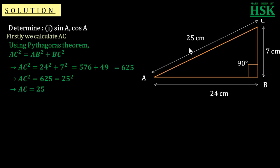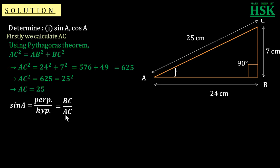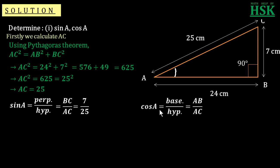We know that sine A equals perpendicular upon hypotenuse. With respect to angle A, the perpendicular is the side opposite to angle A, that is BC, and the hypotenuse is AC. Therefore sine A equals BC upon AC, which is 7 upon 25. Similarly, cos A equals base upon hypotenuse. With respect to angle A, the base is AB and the hypotenuse is AC, so cos A equals 24 upon 25.